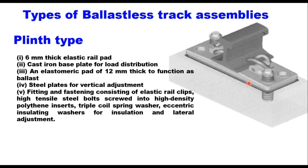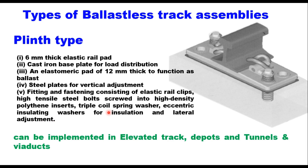The features of this assembly include the rail, and below the rail a 6 mm thick elastic rail pad. Below that is a cast iron base plate for load distribution. Below that is an elastomeric pad of 12 mm thickness to function as ballast, providing elasticity to the track similar to what aggregate ballast provides in a ballasted track. Then below that is a steel plate for vertical adjustment and then the concrete slab. The fittings and fastenings consist of elastic rail clips, high tensile steel bolts screwed into high density polythene inserts, triple coil spring washers, eccentric insulating washers and many other features. This can be implemented in elevated track, depots, tunnels and wire ducts.